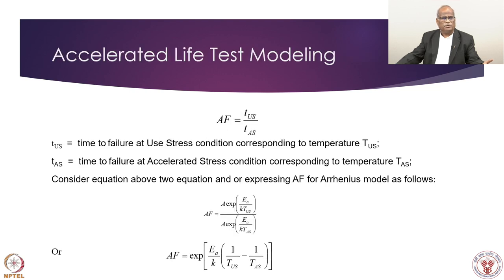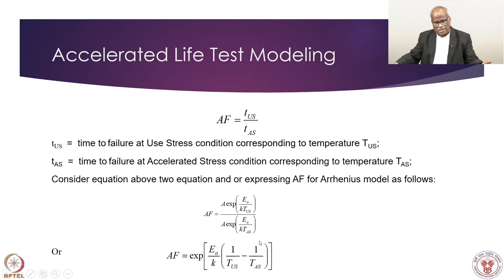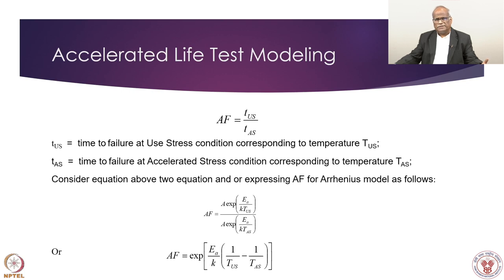Using the Arrhenius relationship, the acceleration factor becomes: AF = exp{ (Eₐ / k) × (1/T_use − 1/T_accelerated) }. This gives a model linking the time under use conditions to the time obtained from accelerated testing. Following modern physics-of-failure approaches, there are questions about the Arrhenius model, but until a proven solution is available this remains the standard. All hypotheses should be tested to determine how well the model reflects temperature-driven degradation, and the physics of failure for many components requires significant investment in research.